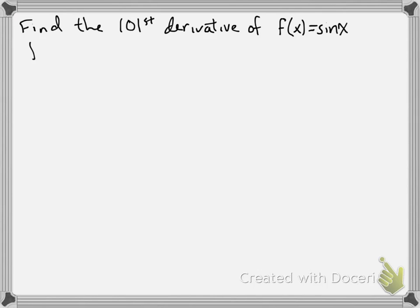So if the function is sine x, we know that f prime of x equals cosine x. We know that the second derivative of x is the derivative of cosine, which is negative sine x.